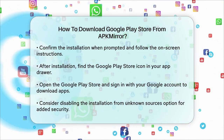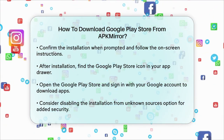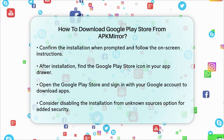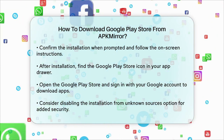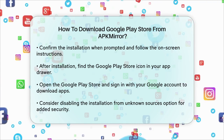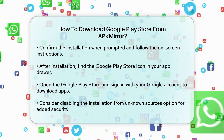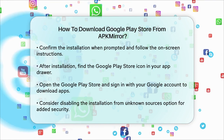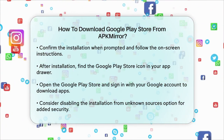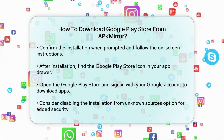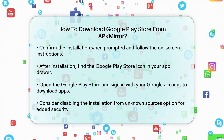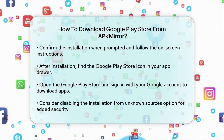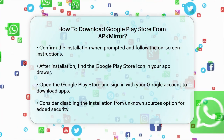Finally, open the Google Play Store and sign in with your Google account to start downloading apps. Remember to disable the installation from unknown sources option if you prefer to keep your device secure. By following these steps, you can successfully download and install the Google Play Store from APKMirror, allowing you to access a wide range of applications on your Android device.